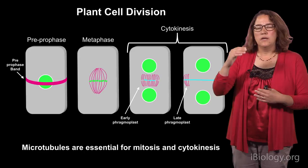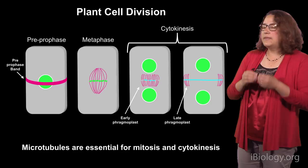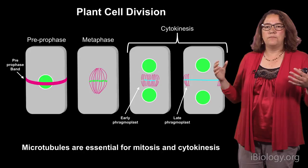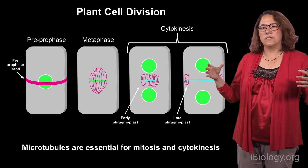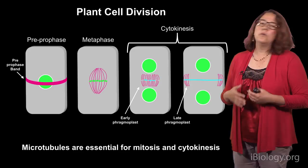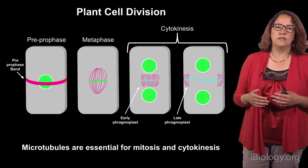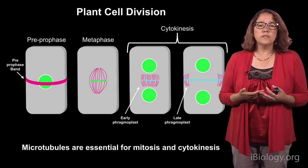This phragmoplast sets up in the middle between the two daughter nuclei, but then has to expand from the middle of the cell out to the cell cortex — to that site that had been defined by the preprophase band. There, the new membrane and cell wall material fuses with the mother cell wall and cytokinesis is completed. Microtubules are absolutely essential for this process. If you were to get rid of the microtubule cytoskeleton, you would halt mitosis and halt cytokinesis.